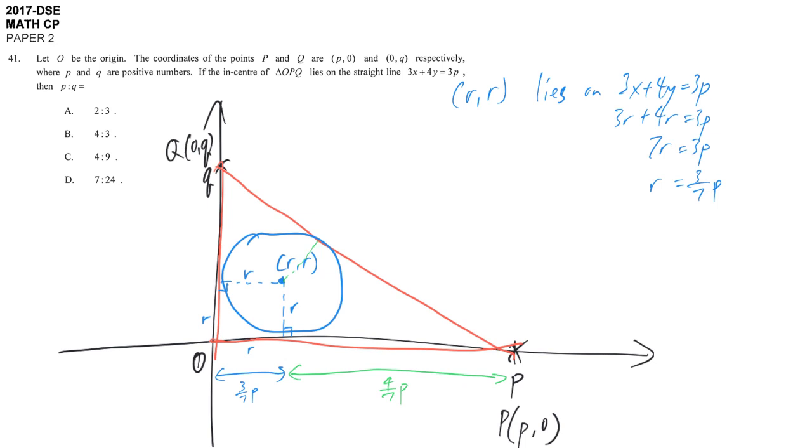The tangent from exterior point property tells us that if we connect a line from the intersection point of two tangents to the center, the two right triangles formed are congruent.